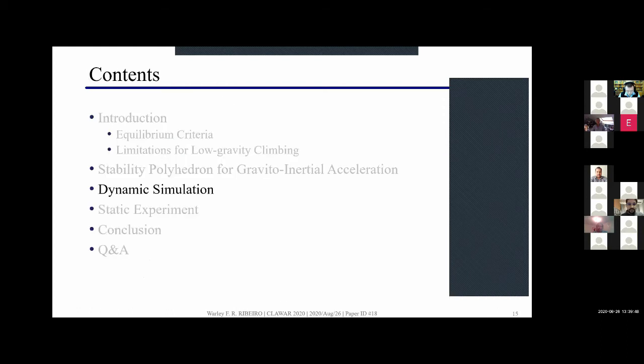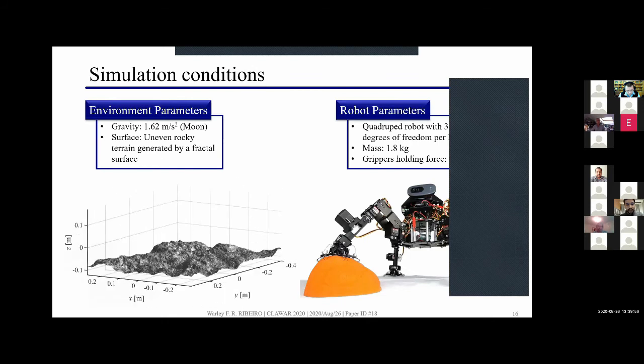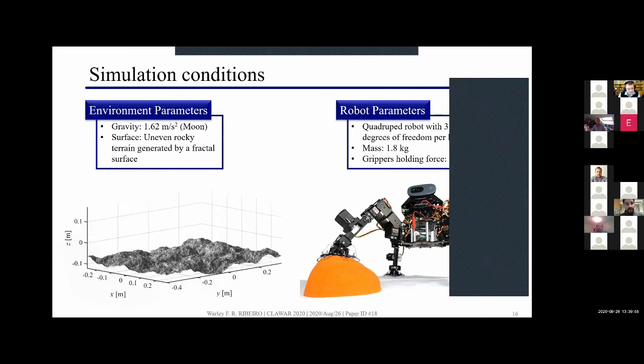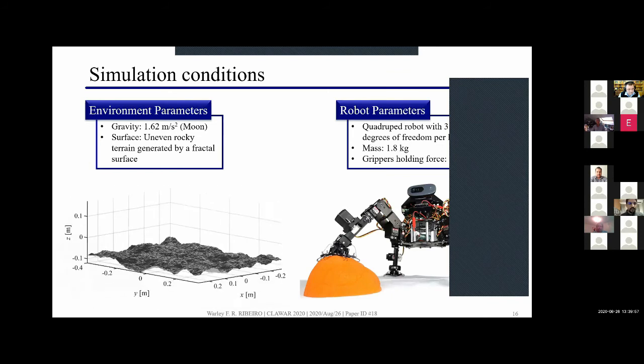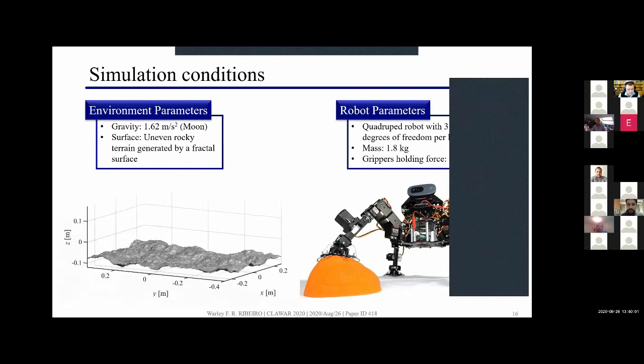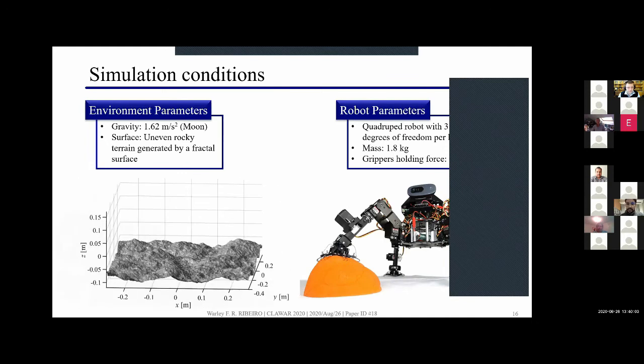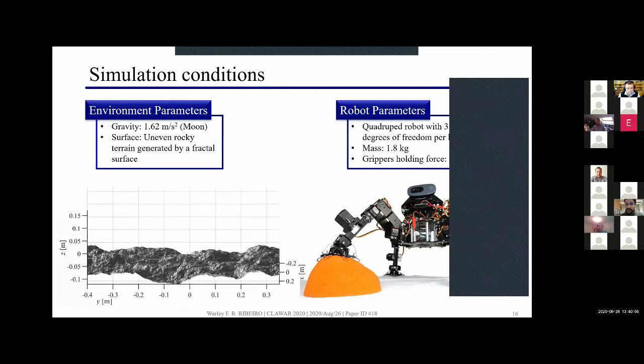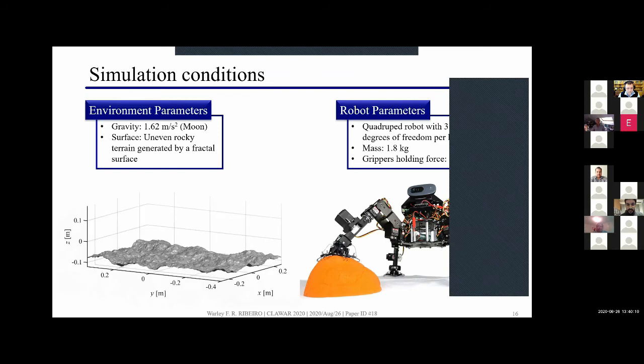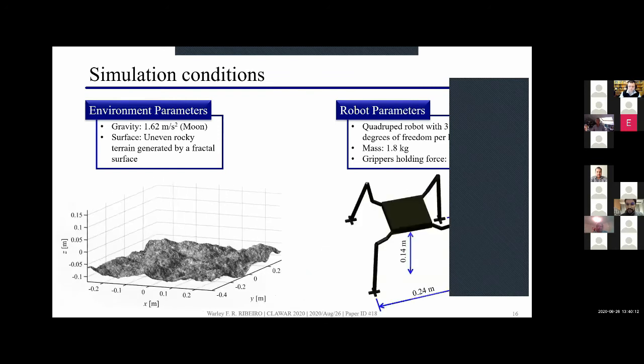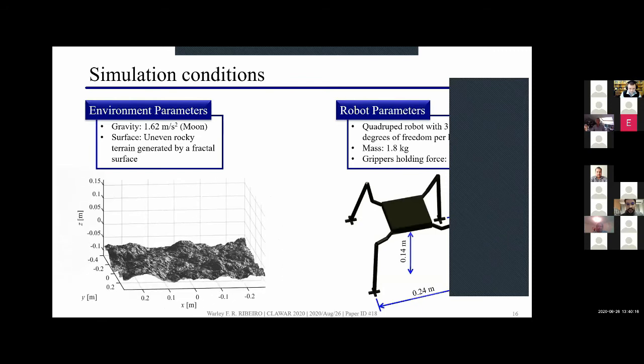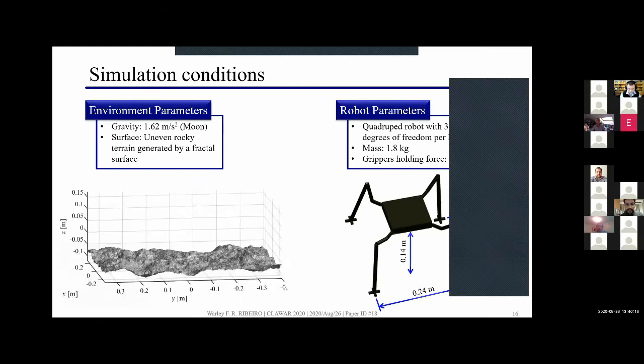Now I'll move on to the dynamic simulation. Here I'll show the simulation conditions we have: some fractal surface to emulate the natural environment and the lunar gravity. For the robot, it's based on the prototype we developed in Tohoku University. It's a four-legged robot with 1.8 kilograms and three actuators per leg. For the simulation we consider that each gripper has 3.2 newtons of holding force and the size of the robot is as shown here in this slide.